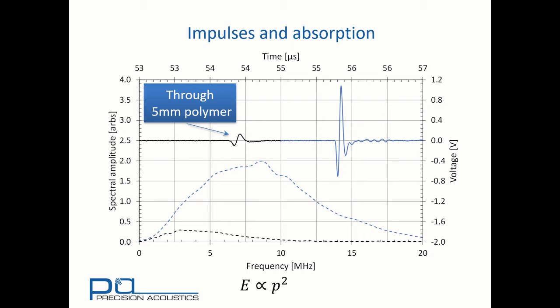It's useful to note that because energy is proportional to pressure squared, the propagation through this polymeric sample has resulted in an energy reduction of more than 97 percent.